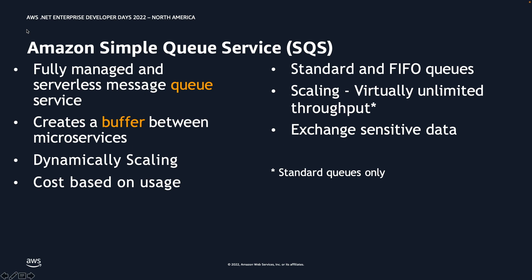Amazon Simple Queuing Service is a fully managed and serverless message queuing service. It creates a buffer between microservices and helps you build distributed systems. It scales dynamically based on AWS infrastructure, and the cost is based on usage — meaning you're charged depending on the number of messages pushed through the queue. This is a significant differentiator. In previous roles, I was responsible for setting up enterprise service buses with Tibco, Kafka, and MuleSoft, which required significant cost and effort to stand up and keep always on.